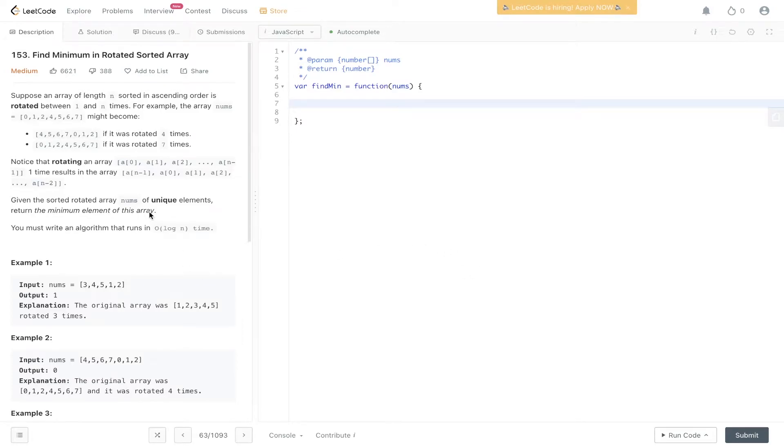Question 153: Find Minimum in Rotated Sorted Array. We have an array that has been rotated a number of times. Here we have [4,5,6,7,0,1,2], which has been rotated four times, so the minimum is now here. This has been rotated seven times, so the minimum is back at the start.